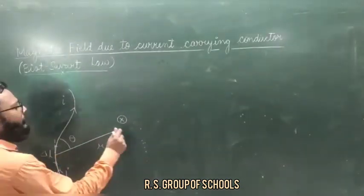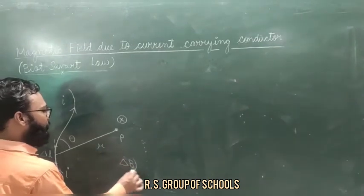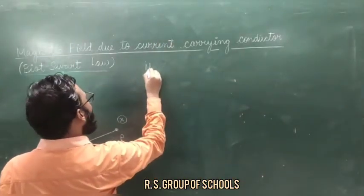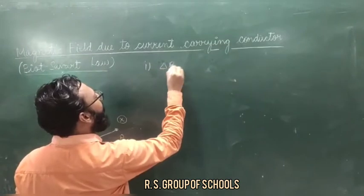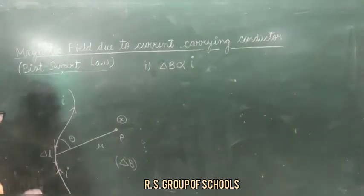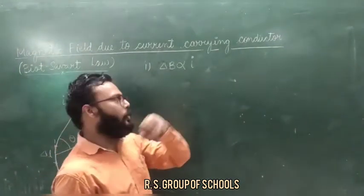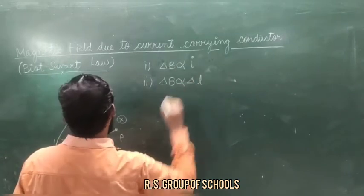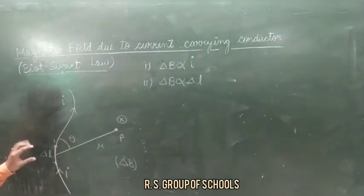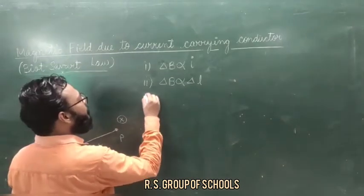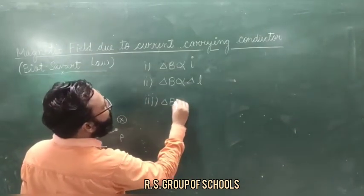The first factor on which the magnetic field depends: the magnetic field produced by the small current carrying element is directly proportional to the current I. The second factor: it is directly proportional to the length of the small element delta L. The third factor: it is proportional to sine theta, the angle between the element and the line joining it to the point.